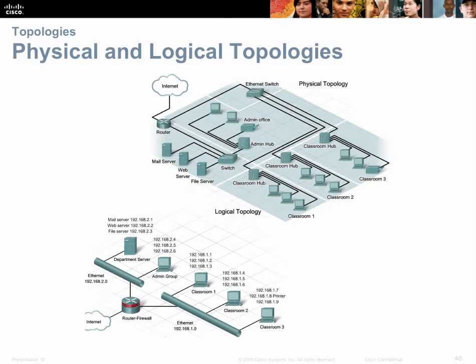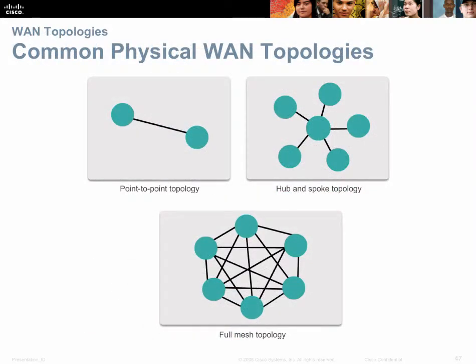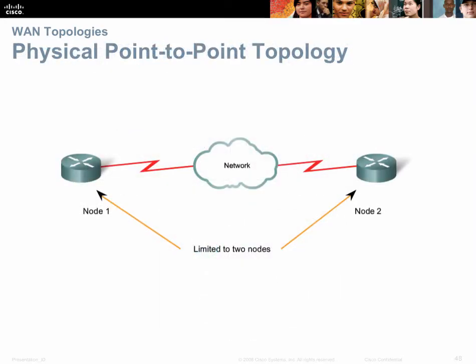Physical versus logical topologies: the physical topology defines how devices are actually physically laid out within a geographic space like a building or campus, showing each computer's location and cabling to routers and switches. The logical diagram shows how devices are cabled together logically. Physical topologies include point-to-point (one device cabled to another), hub-and-spoke (many devices cabled to a switch or hub), and full mesh (typically with routers, where each router can talk to every other router).